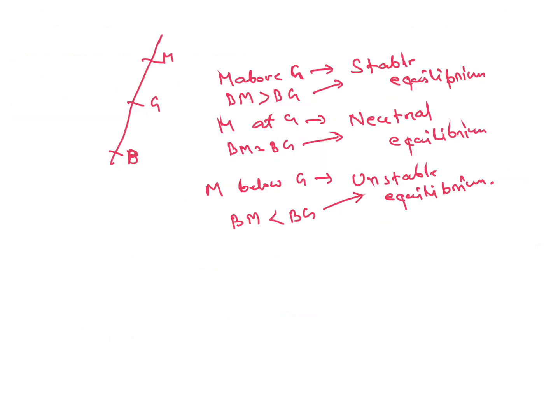Some questions also ask these conditions in terms of positional descriptions: M is above G means stable, M is at G means neutral, and so on. You should remember all three conditions thoroughly.